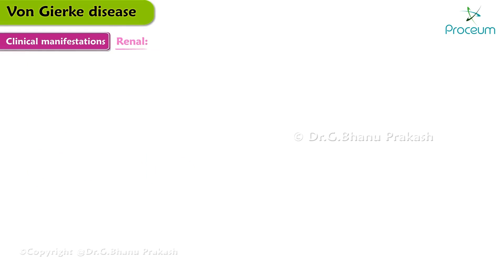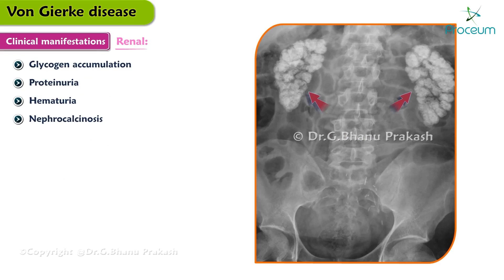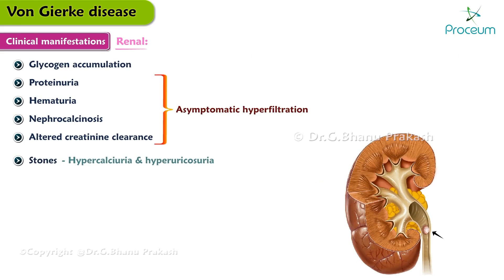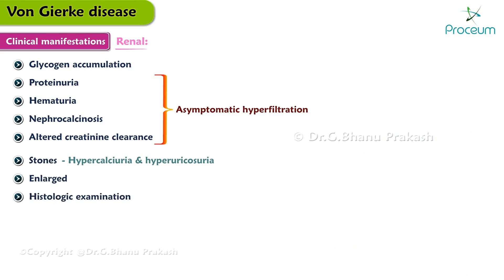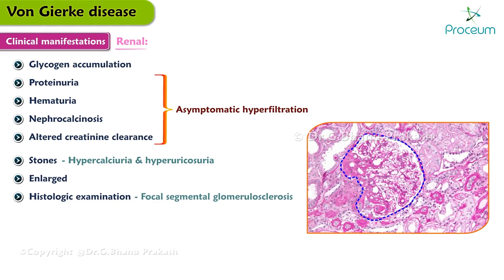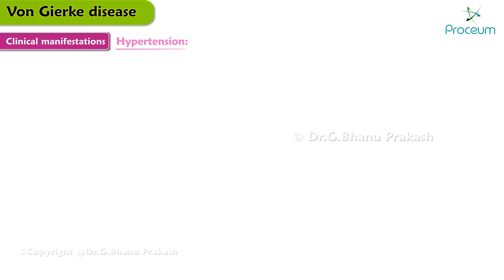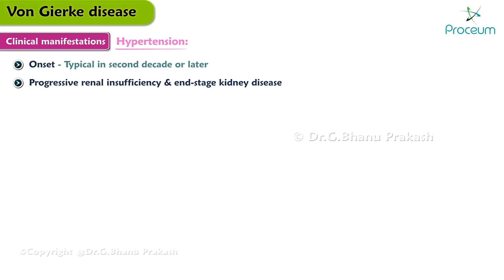Renal disease results from glycogen accumulation in the kidney. Proteinuria, hematuria, nephrocalcinosis, and altered creatinine clearance typically follow a period of asymptomatic hyperfiltration. Stones result both from hypercalciuria and hyperuricosuria. The kidney appears enlarged, and histologic examination reveals focal segmental glomerulosclerosis and interstitial fibrosis. Hypertension is common with onset typically in the second decade or later. A subset of patients develops progressive renal insufficiency and end-stage kidney disease.